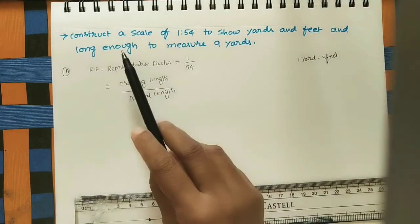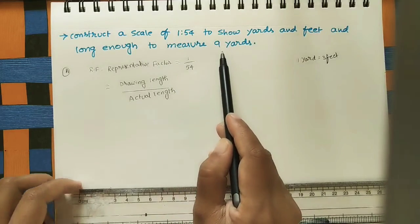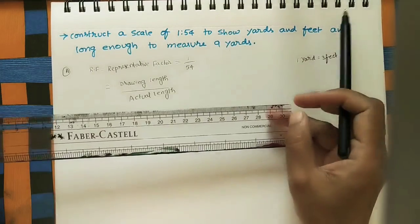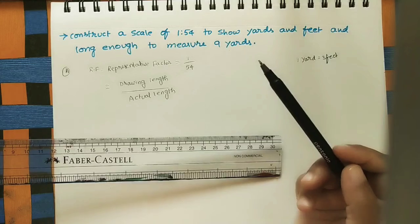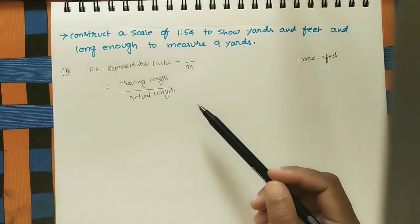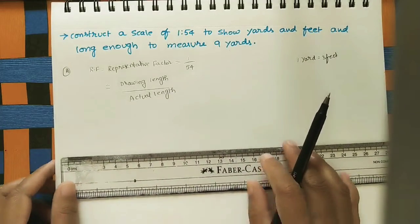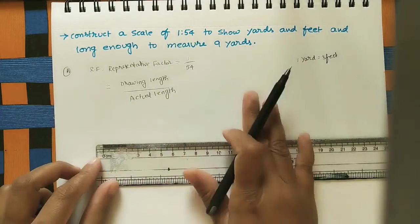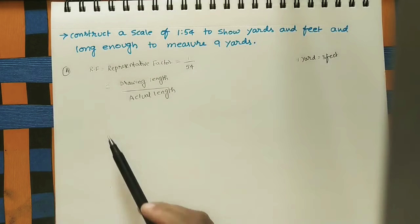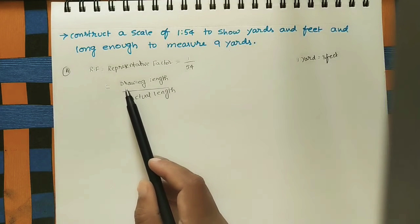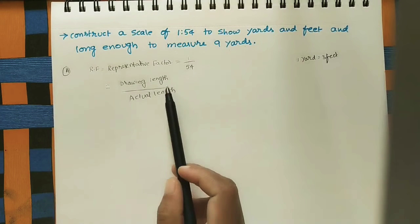The scale must be long enough to measure 9 yards — that is the maximum limit. By using this normal scale we can measure up to 30 centimeters, but here we have to construct a scale that can measure up to 9 yards. For doing the scale we should know the length, so we need to calculate the drawing length. RF is the ratio of drawing length to actual length, where actual length is the maximum limit of the scale.